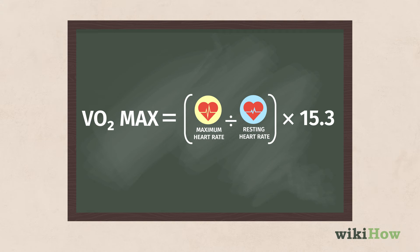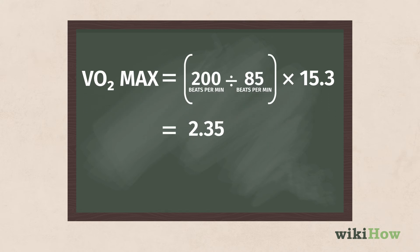For example, if your resting heart rate is 85 beats per minute and your maximum heart rate is 200 beats per minute, you would divide 200 by 85 and get 2.35.